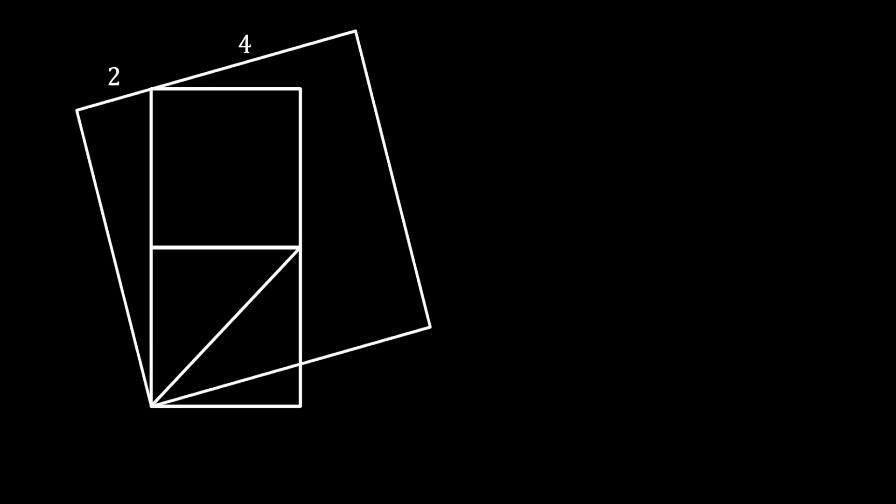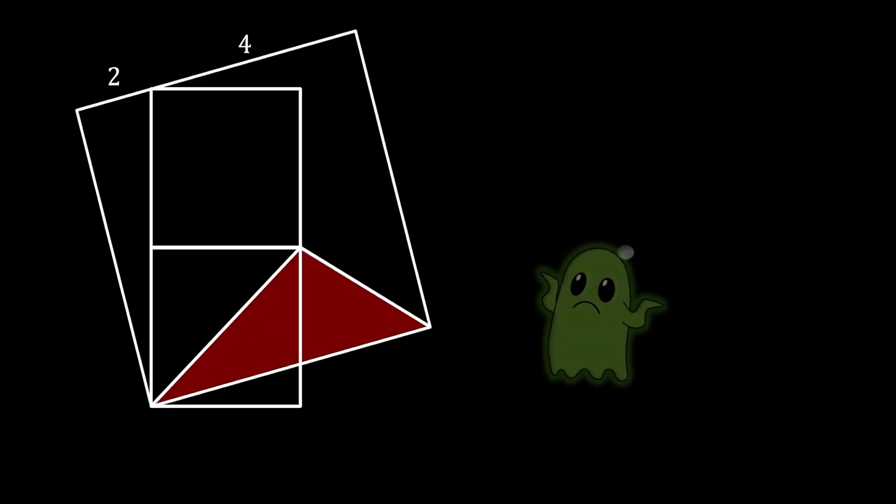We will start our problem with a square, then clone it and place the clone on top, as seen in the sketch. We then construct a tilted square so that its bottom left corner is aligned with the bottom left corner of the small bottom square, and its upper side touches the upper left corner of the upper small square, divided into two segments of lengths two and four. We pull the diagonal of the small bottom square and from its upper right corner draw another line to the bottom right corner of the tilted square, forming a red triangle.